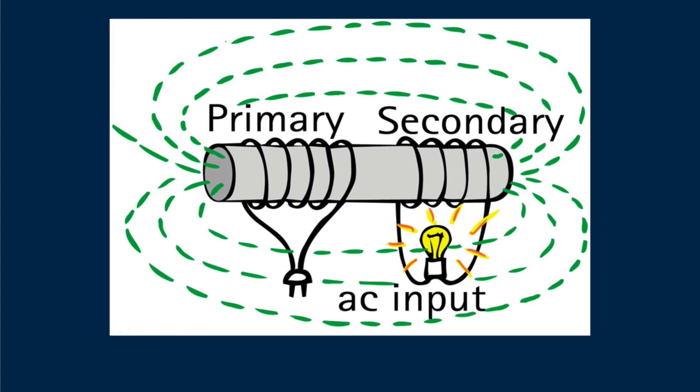And the voltages involved depend on the relative number of turns on each coil. Here we have fewer coils in the secondary. But what if there were more coils in the secondary than the primary? Then the voltage induced in the secondary would be greater than the voltage in the primary. Does this mean a multiplication of energy? A multiplication of power? No way.